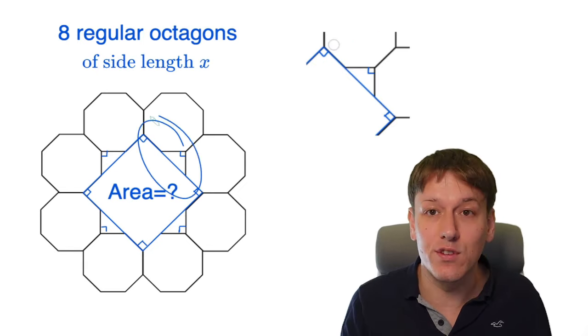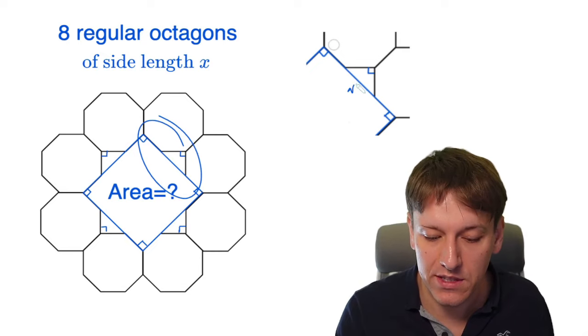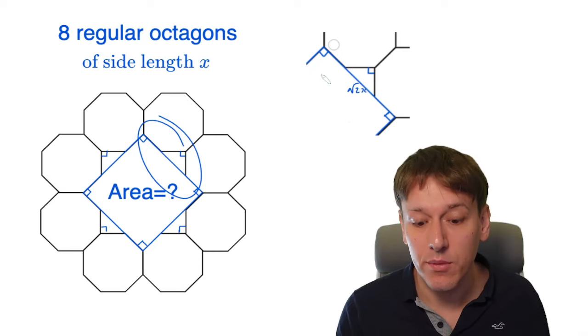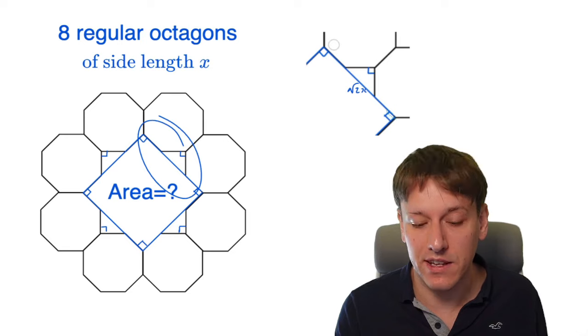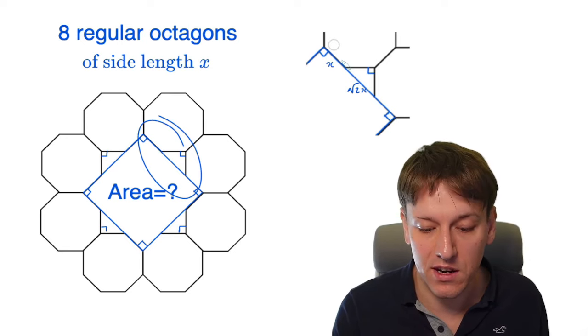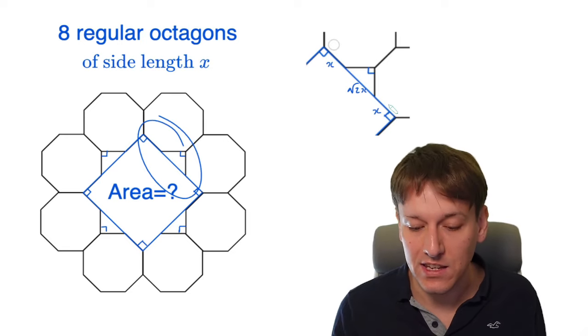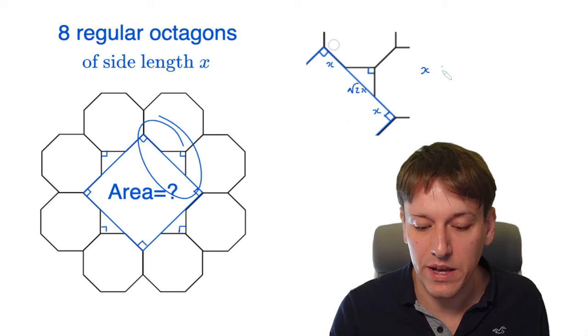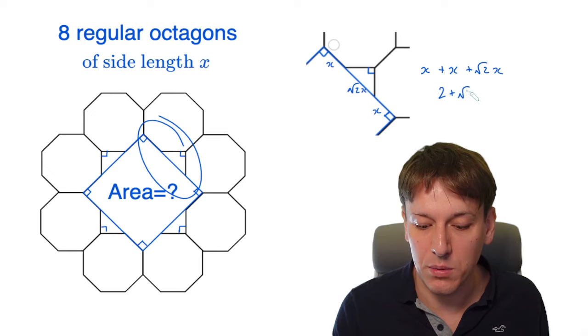So now if we think about the side length of the square, well, we know that this is root 2 times x. And we also know that the other parts of this side length are sides of the octagon. So these are just x each. So I've got the side length of the square is x plus x plus root 2x, you could write that as 2 plus root 2 times x.